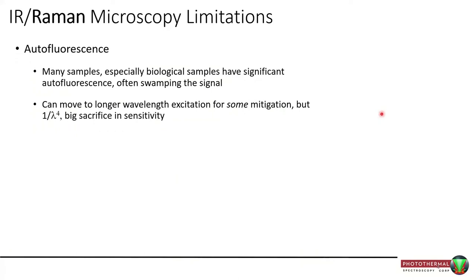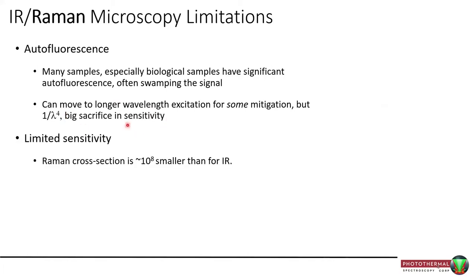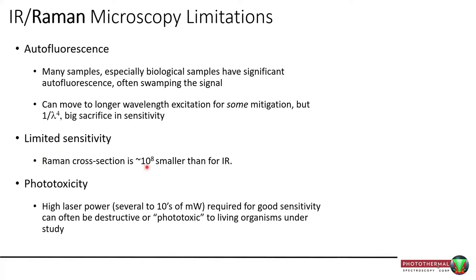On the Raman side, there are also technical limitations from maturity. Autofluorescence can swamp the signal — any Raman practitioner knows this well. You can mitigate some of that by going to longer wavelengths, but you lose a large amount in sensitivity. Limited sensitivity is a fundamental issue; the cross-section is 10 to the 8th smaller than for IR. And if you're doing live cell work, phototoxicity can be an issue, especially pumping in tens of milliwatts.